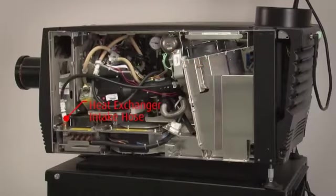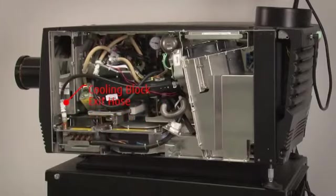The heat exchanger intake hose is used to fill the system with new fluid. This hose has a female connector. The cooling block exit hose is used to remove fluid from the system. This hose has a male connector.